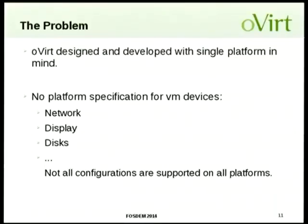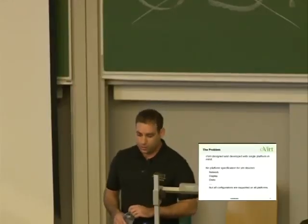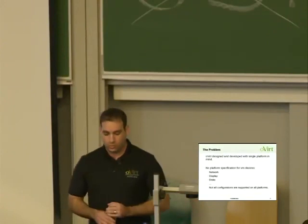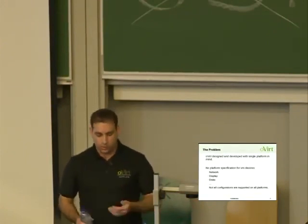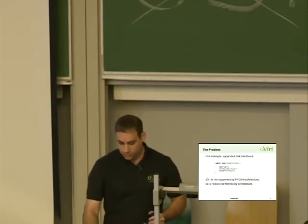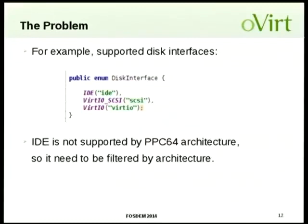The problems we had to deal with: first, oVirt was designed with a single platform in mind — only x86 supported for KVM. There were no platform specifications, and VM devices like network and display are not the same across platforms. For example, PPC64 doesn't support IDE disk interfaces, so we had to filter out IDE to block users from trying to use it on PPC, because we know it will fail.